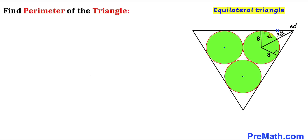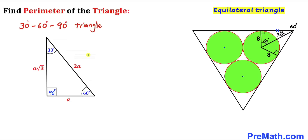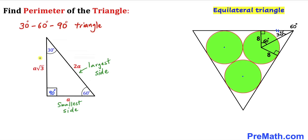Now let's focus on this right triangle. This is a 90 degree angle, this is 30 degrees, so this angle has got to be 60 degrees. Therefore this is a 30-60-90 special triangle. Recalling the 30-60-90 triangle: this is our smallest side, this is our largest side, the largest side is twice the smallest side, and the third side is a times square root of 3.